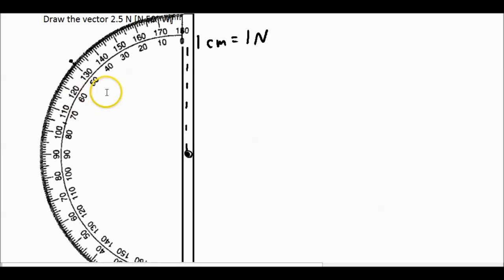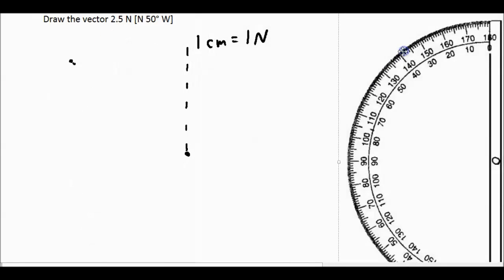I can get rid of my protractor. Now you can't see it, but I'm going to take a ruler and I laid it across the paper so that I could draw a straight line from the starting point to the 50 degree mark that I made here.